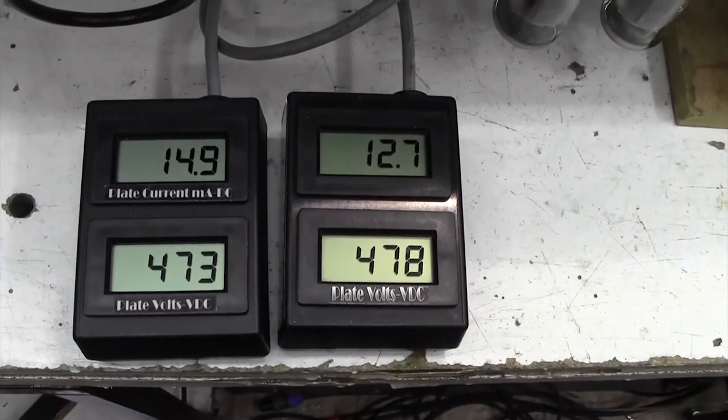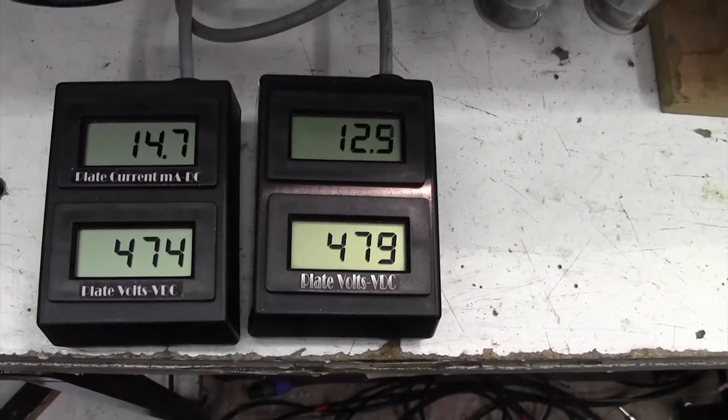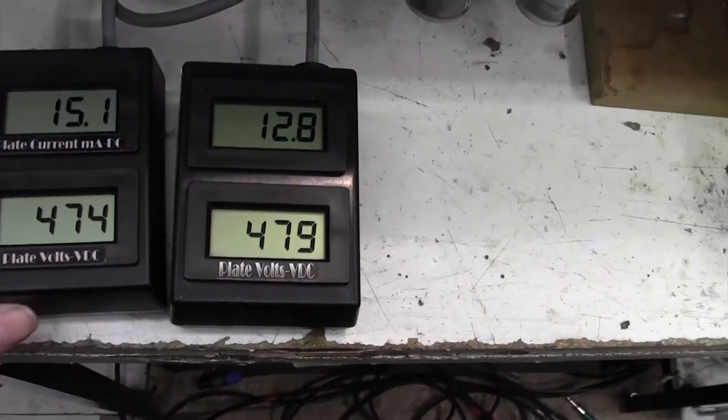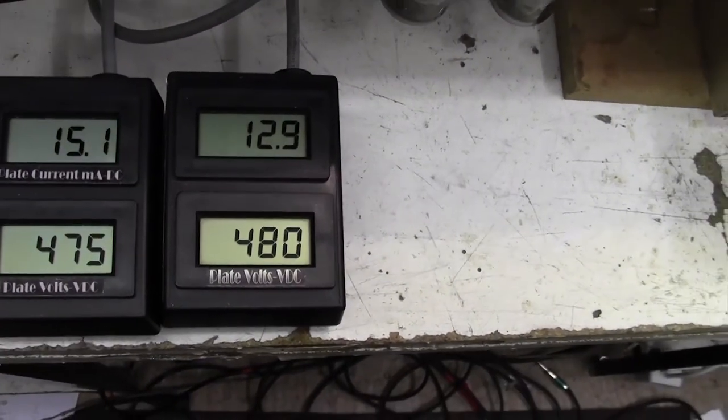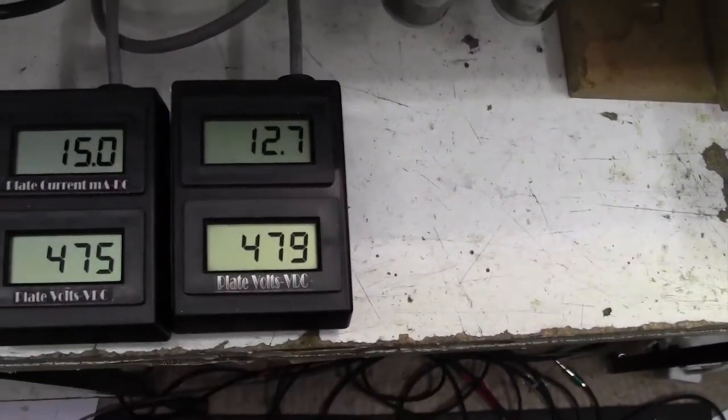one on each tube. You only need to measure the bias on one tube if you have a closely matched set, but I always like to just have a look at what's going on on each valve, and it saves me having to swap the meter over from valve to valve.